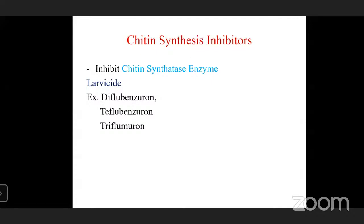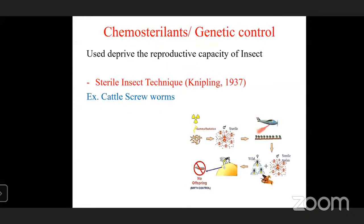Chemosterilants are reproductive inhibitors that prevent insects from reproducing. The sterile insect technique (SIT) was first conceived by Knipling in 1937. It was applied using gamma irradiation from cobalt-60 to manage cattle screwworm flies. Knipling received the World Food Prize for the sterile insect technique — an important exam point.